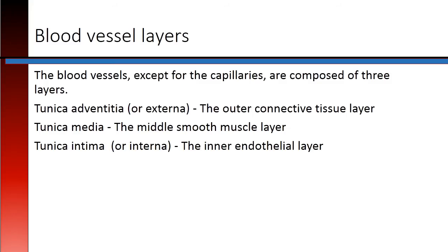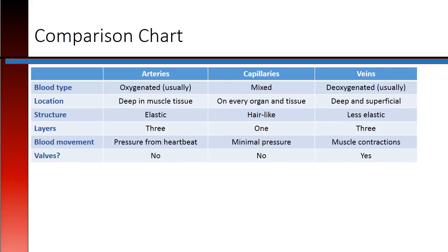The blood vessels, except for the capillaries, are composed of three layers: the tunica adventitia, or tunica externa, which is the outer layer; the tunica media, which is the middle smooth muscle layer; and the tunica intima, or interna, the inner endothelial layer. This chart shows common differences and similarities between the arteries, capillaries, and veins. You may want to print this off for reference later.